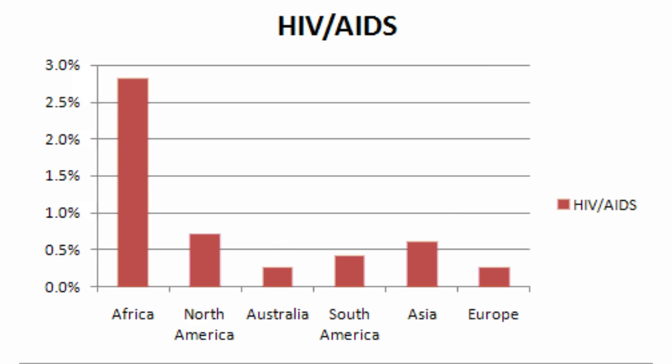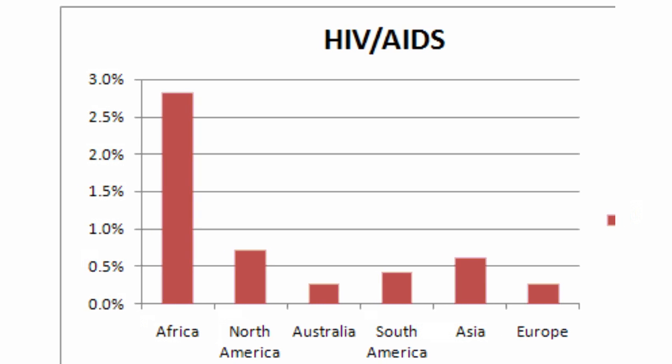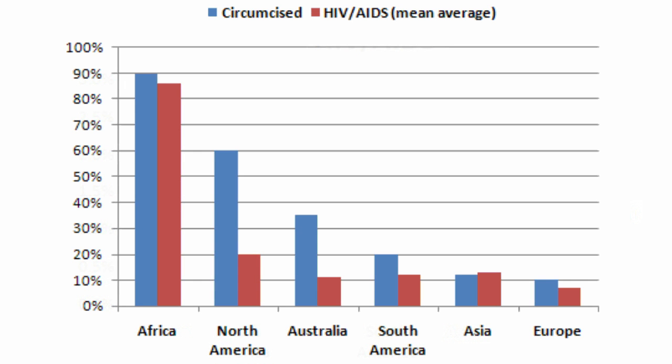This graph shows the HIV prevalence per continent, with the top of the graph at 3% and the bottom at 0. We are zoomed in far enough here to see things more clearly, but we can't see the circumcision rates, so we can't compare. So I overlaid the two by moving the global average to 50%. Now we can see if there's a correlation, an inverse correlation, or no correlation at all.